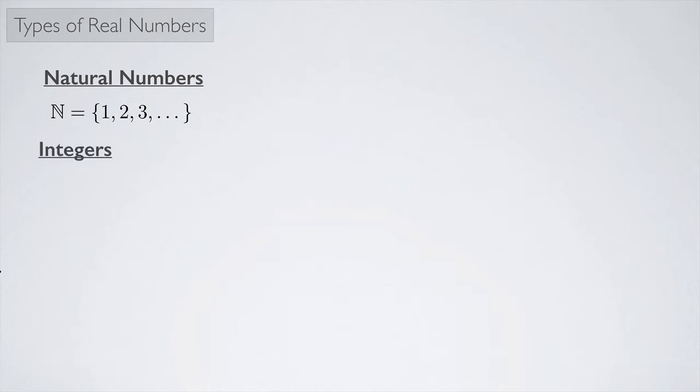Next we have the integers. And the integers we label with the letter Z, and those are the numbers that include the counting numbers and zero, and then we have the negatives of the counting numbers. And so this kind of goes off in both directions.